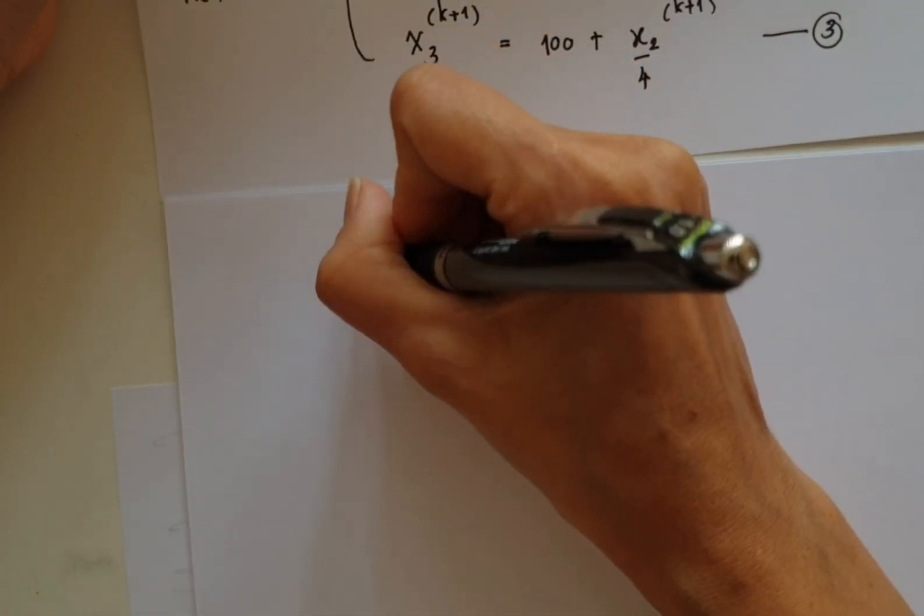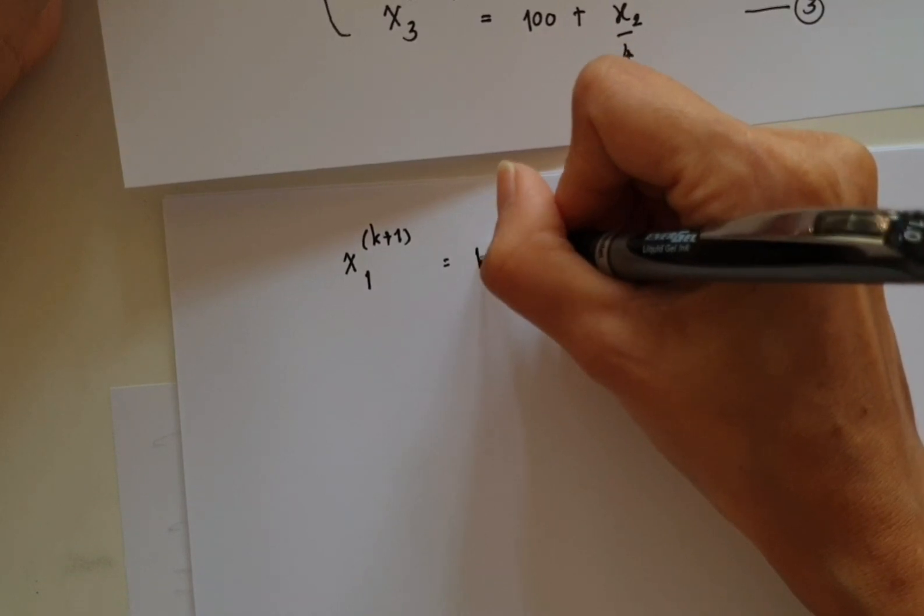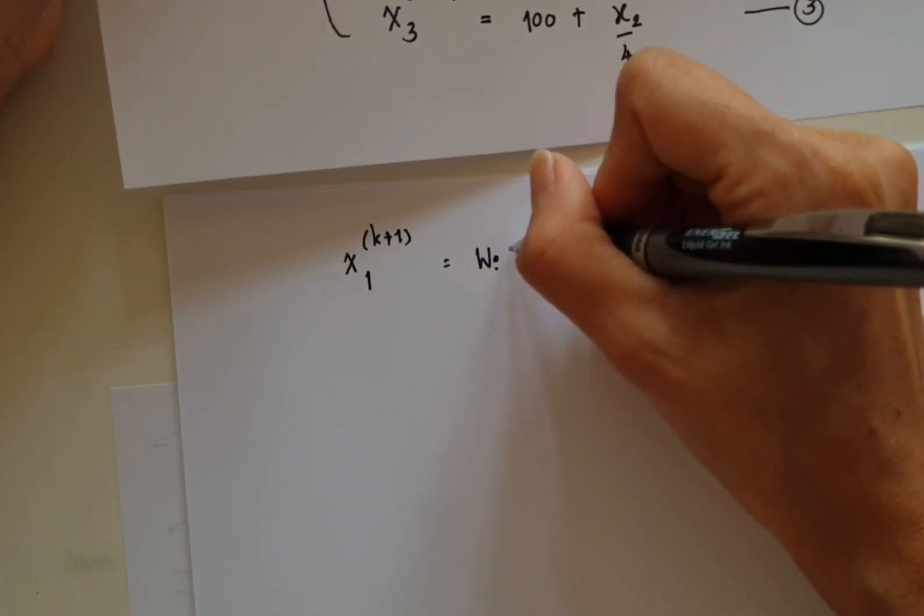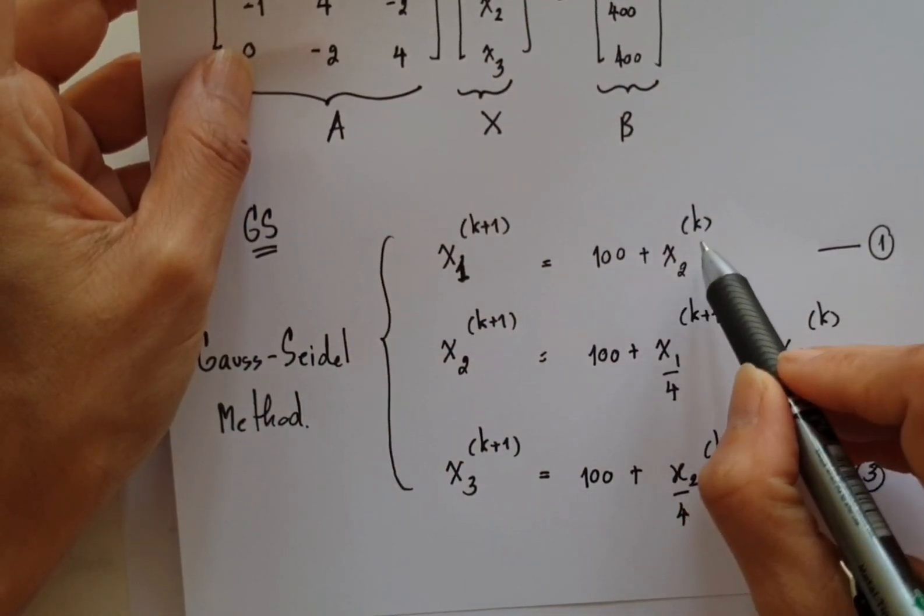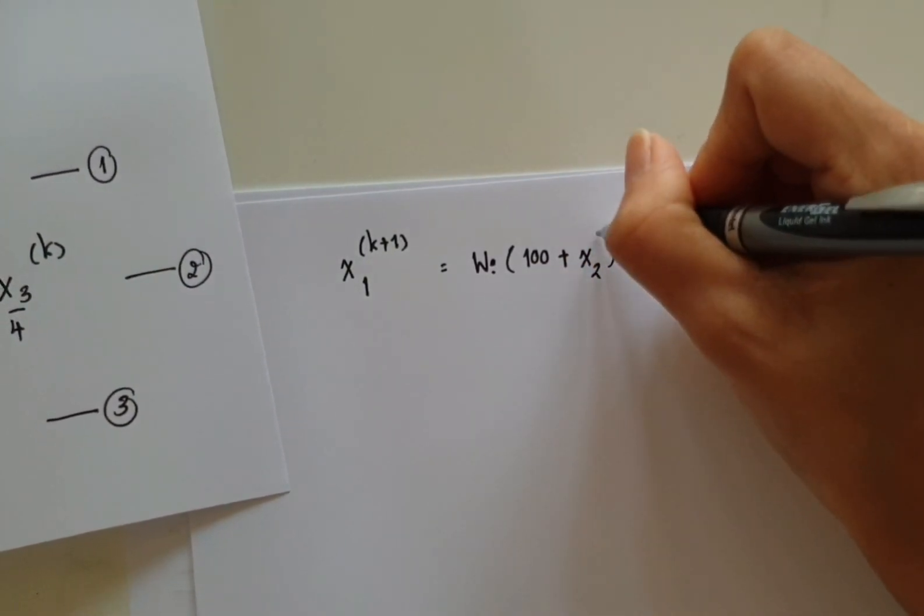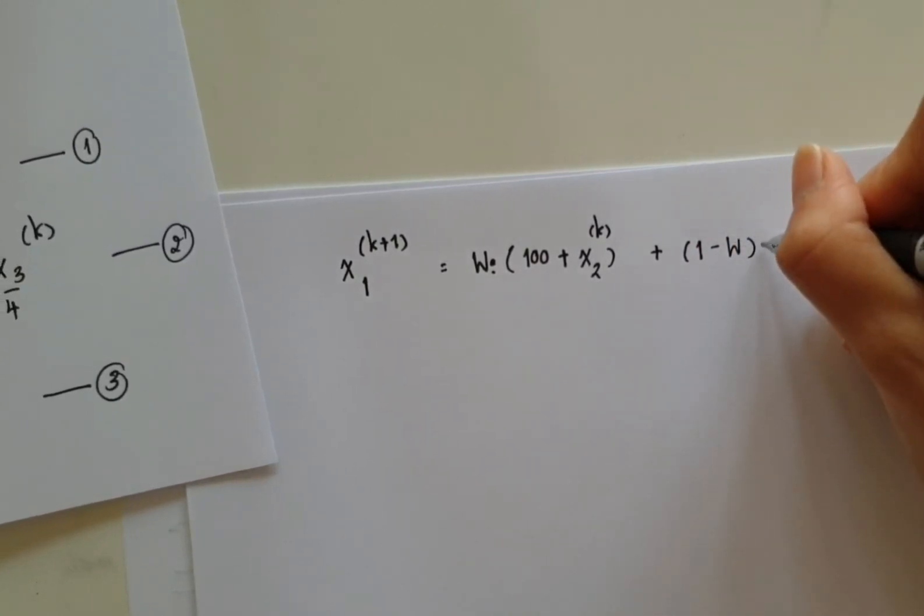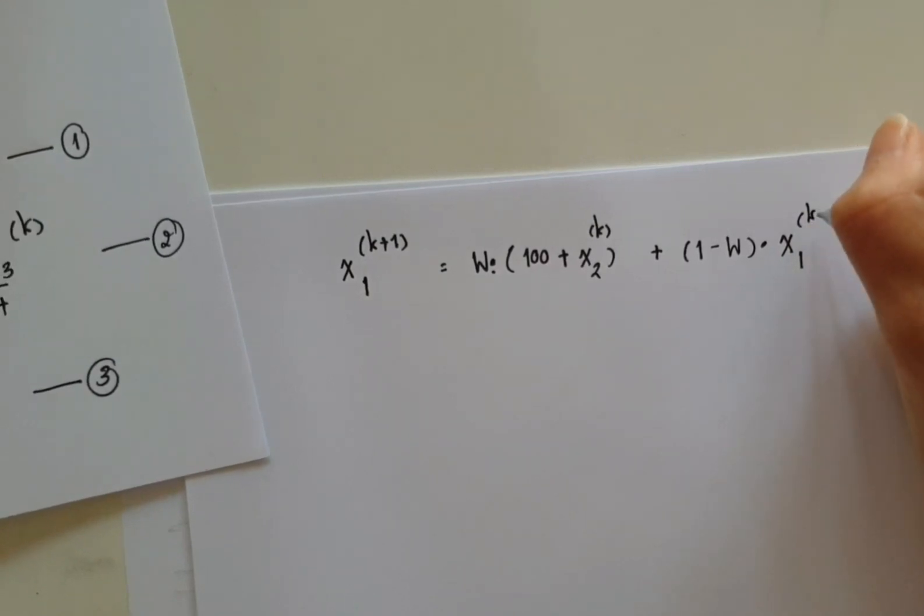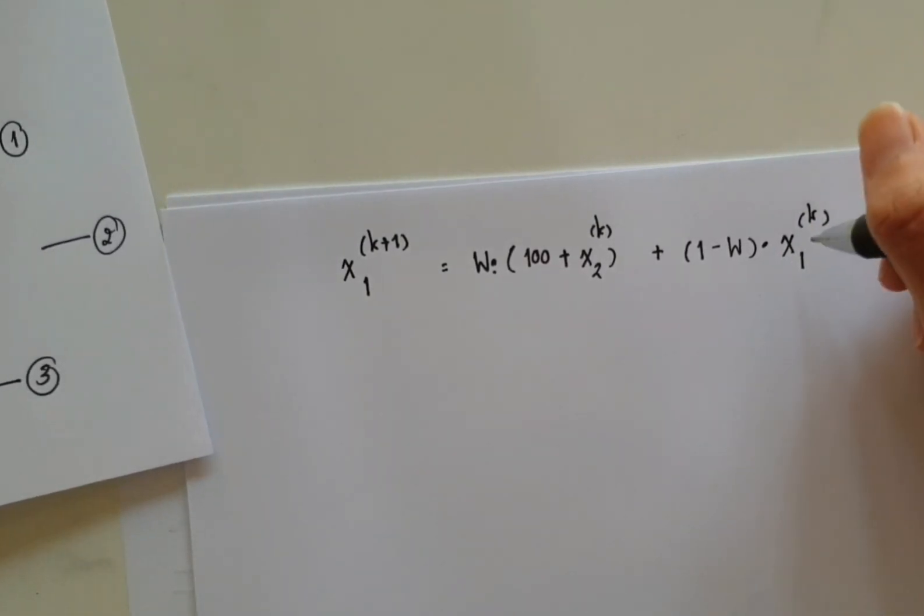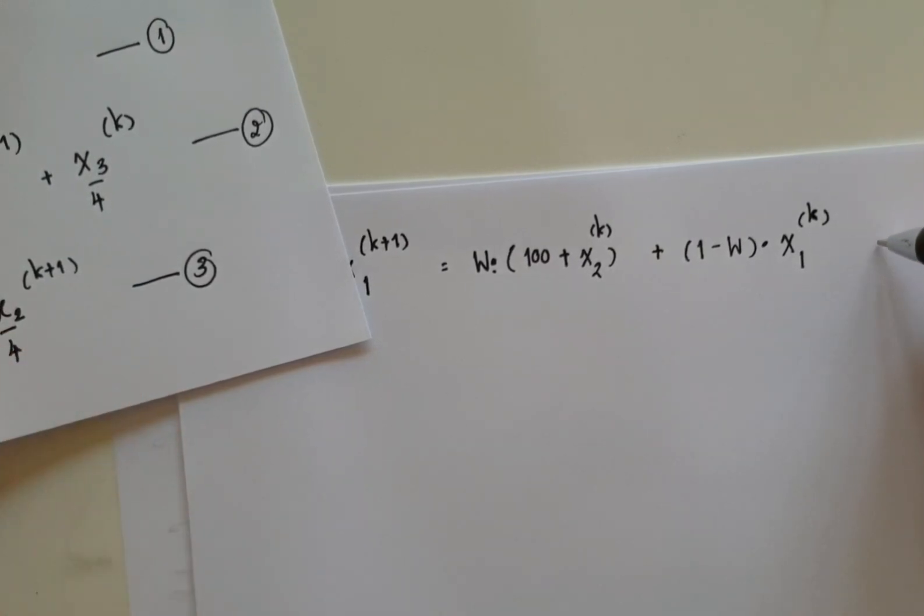But for successive over-relaxation, what we will do is to determine x_1 at k+1 from W times 100 plus x_2 at k iteration over 4, plus 1 minus W times x_1 at the previous iteration, which is x_1 at k. So this would be equation 4.